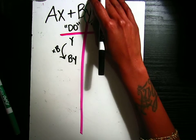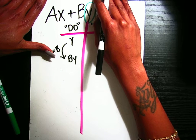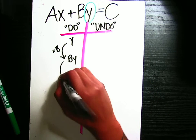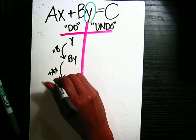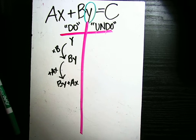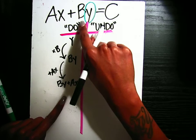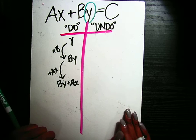So now, after I got BY, what is the next thing that I did to my equation? I added AX. So I'm going to add AX, which gives me BY plus AX. AX plus BY is the exact same thing as BY plus AX. I just wrote them backwards. Same thing.